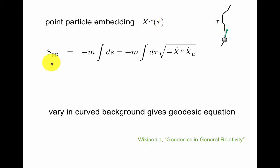The point particle action in the worldline formalism is given by minus the mass of the particle times the integral of the space-time interval. This should be fairly familiar to you.